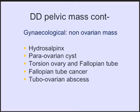Gynecological non-ovarian mass: in the pelvis sometimes you can find hydrosalpinx, in particular after hysterectomy. A para-ovarian cyst is absolutely benign with no indication to intervene. Torsion of the tube and the ovary is a very distinct and rare condition but should be in your differential. Also consider fallopian tube cancer and tubo-ovarian abscess — women usually present with pelvic pain, fever, and a palpable mass while inflammatory markers such as white cell count and CRP are increased.